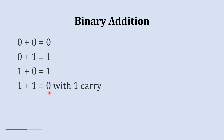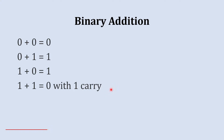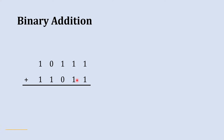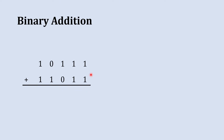Now I will explain how this works using the next example. We have two binary numbers and we are going to add them together. We start with the rightmost column and then move towards the left-hand side.